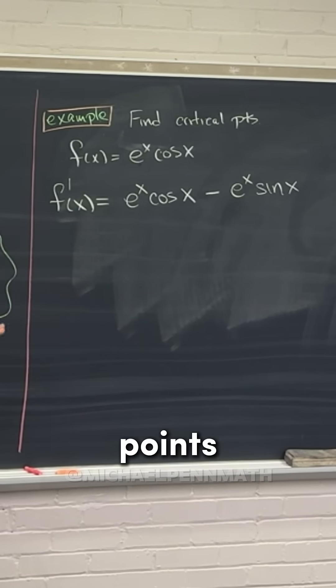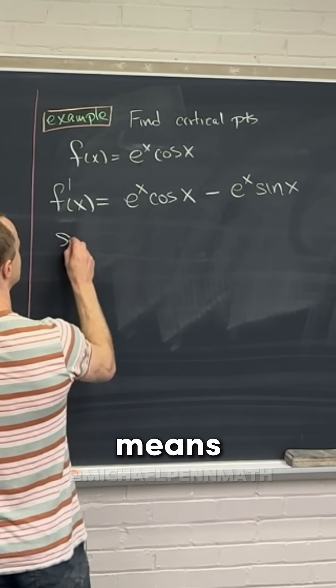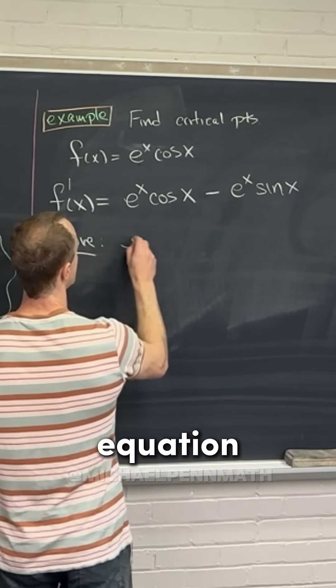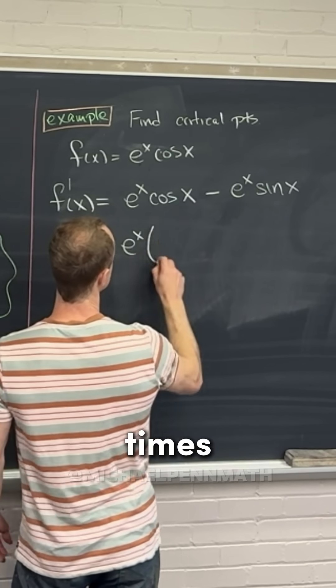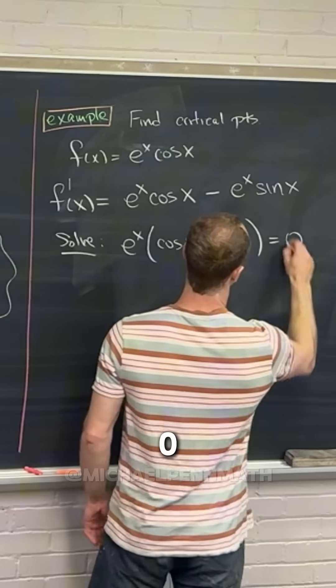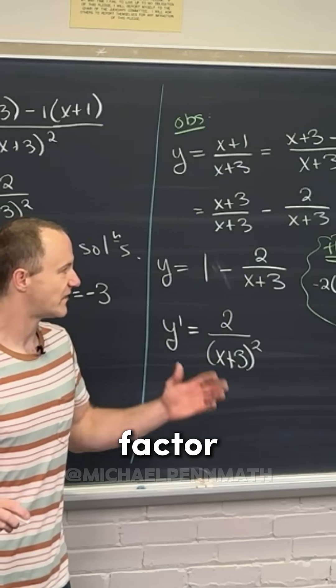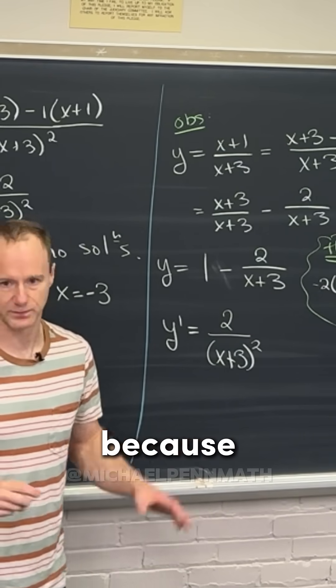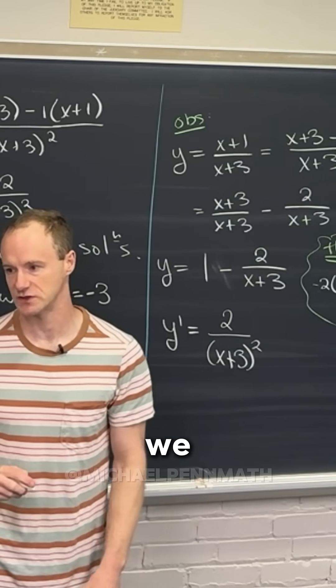So now critical points are where this equals zero, which means we need to solve the equation e to the x times cosine of x minus sine of x equals zero. Observe that what I did there is I factored the e to the x out just because that's going to be helpful as we do our solving.